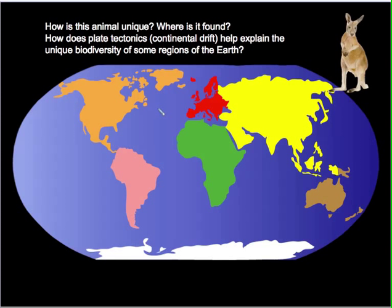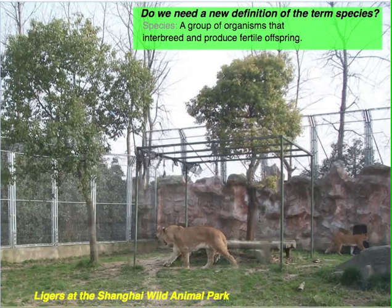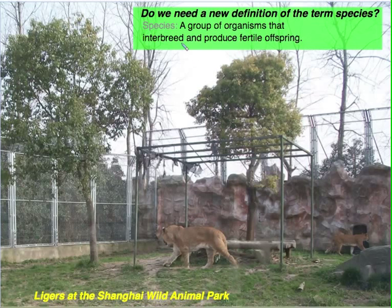How is this animal unique, where is it found, and how does plate tectonics and continental drift help explain the unique biodiversity of some regions of the earth? Finally, we defined the term species in section 2.1 as a group of organisms that interbreed and produce fertile offspring. Ligers are hybrid animals produced by a lion father and a tiger mother in captivity. These ligers are sometimes fertile, especially the females. Consider how this occurrence and similar occurrences among other species challenge our definition of a species as a group of organisms that interbreed and produce fertile offspring.